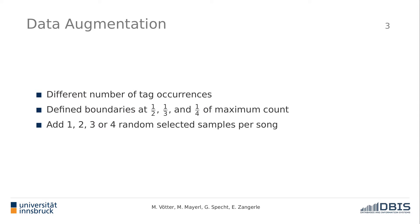We do that by defining decision boundaries at one half, one third, and one fourth of the maximum tag count, and then use one, two, three, or four randomly selected samples per song.